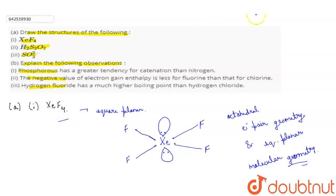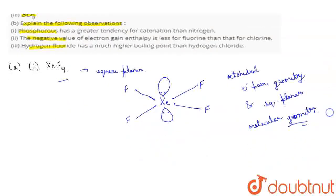Now, moving forward. H2S2O7. H2S2O7. So basically H2S2O7 is also known as pyrosulfuric acid. Clear?